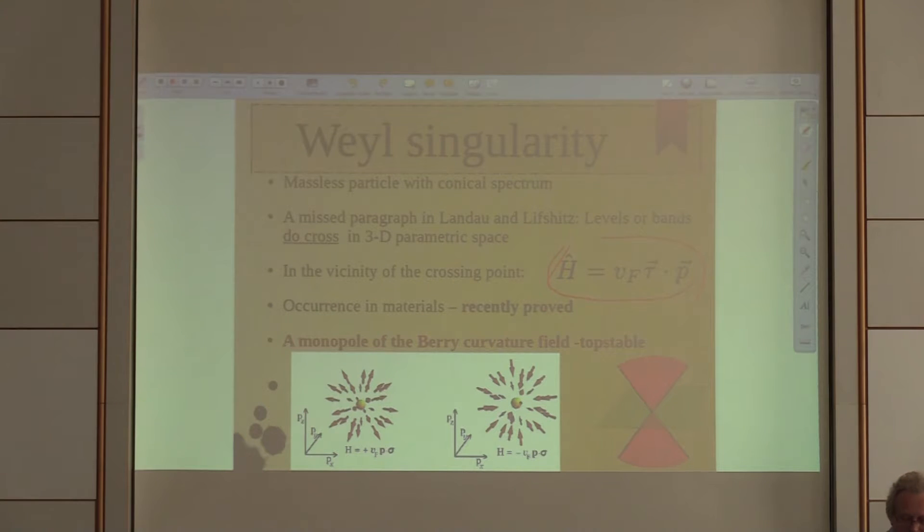They've forgotten to mention that if one increases parameter space to three dimensions, one can have crossings of the levels for three. Just occasional crossings. Nothing to do with high-energy physics. In any case there will be conical spectrum in the vicinity of any crossing point. There will be Berry curvature and corresponding monopole associated with any Weyl point of this kind.